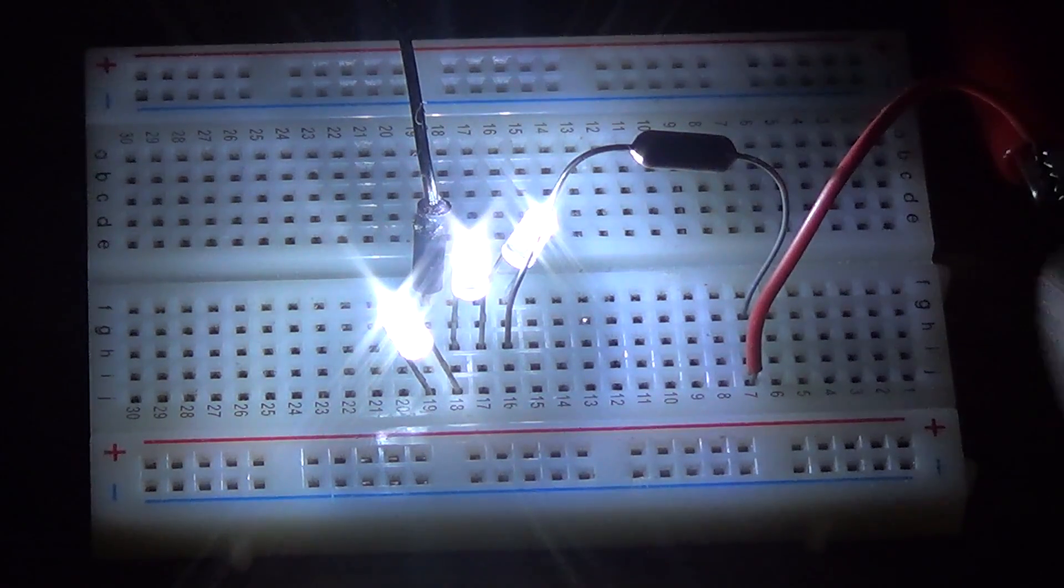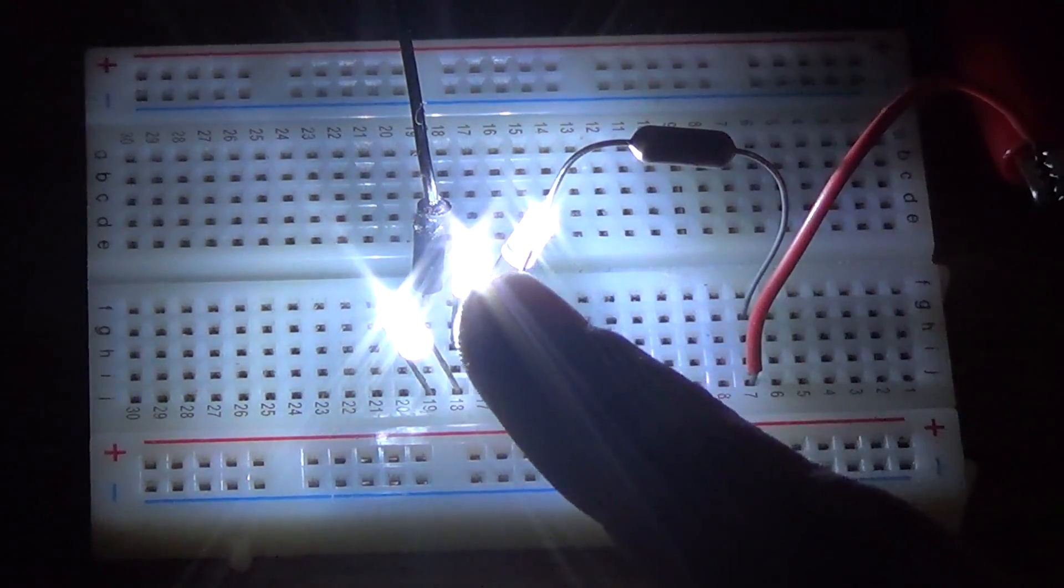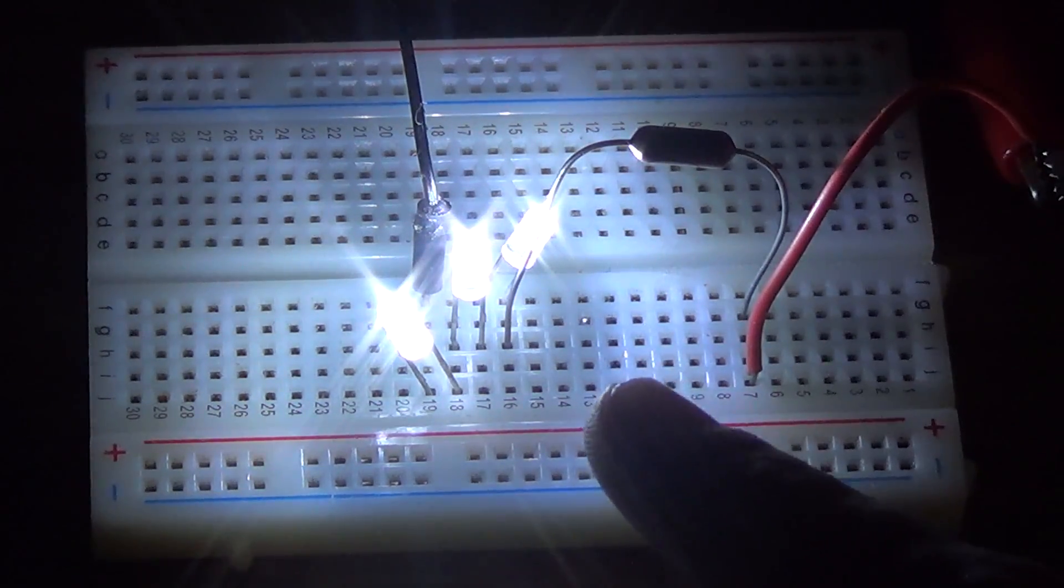Alright, now you can see I got my 180 ohm resistor here, and I'm actually powering all of my 3 LEDs to their full maximum brightness, and they haven't burned out yet. So I'd say we're doing pretty good.